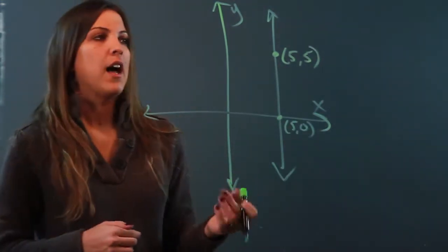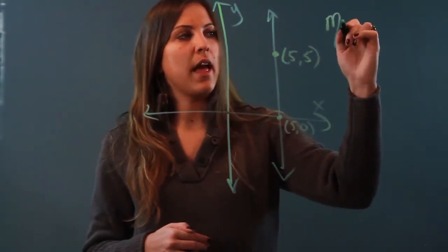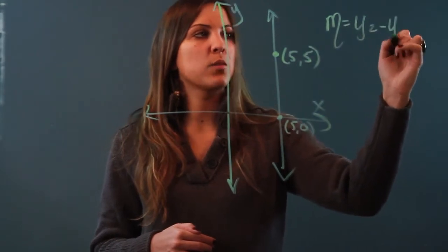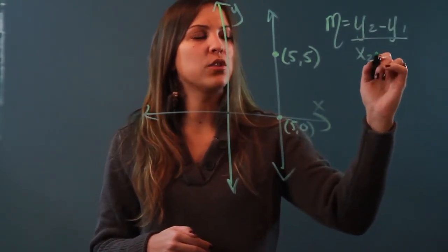To find the slope of a line, I'm going to use the equation m equals y2 minus y1 over x2 minus x1.